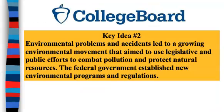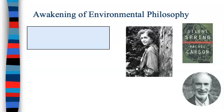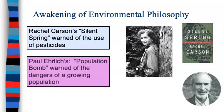Leading us to key idea number two: environmental problems and accidents led to a growing environmental movement that aimed to use legislative and public efforts to combat pollution and protect natural resources, with the federal government establishing new environmental programs and regulations. The environmental movement really begins with Rachel Carson and her book Silent Spring, which warned about the use of pesticides. In addition, Paul Ehrlich's Population Bomb warned of the dangers of a growing population.